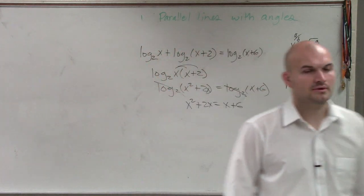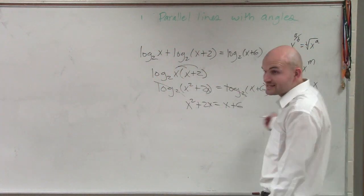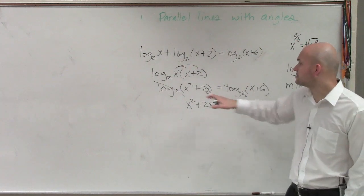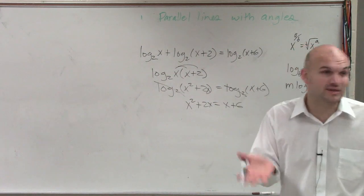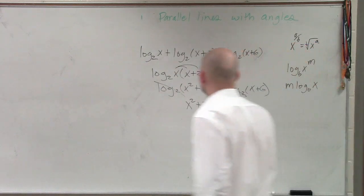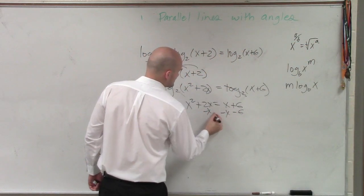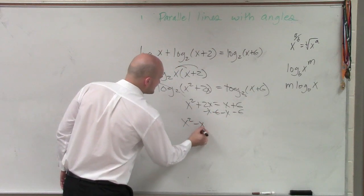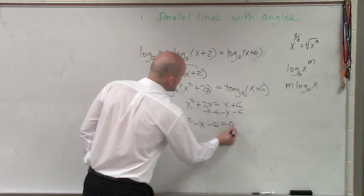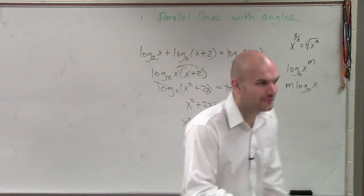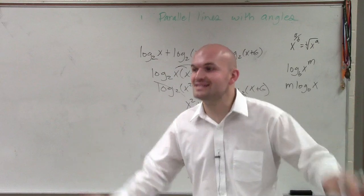Now, the next thing we do is we need to solve this now, right? It says solve. So now we just need to solve. So therefore, we need to isolate the variables. So we subtract an x. Subtract 6. Therefore, we get x squared minus x minus 6 equals 0. Right? We set it equal to 0. Set it equal to 0.